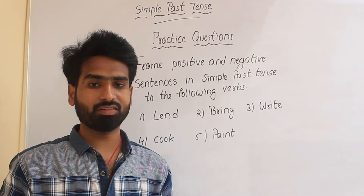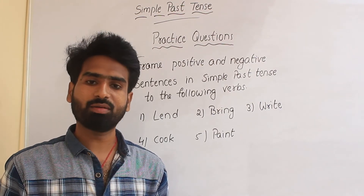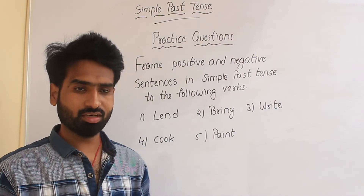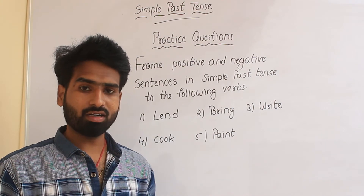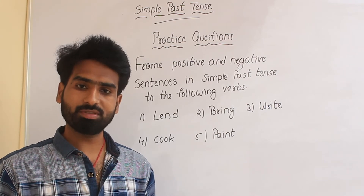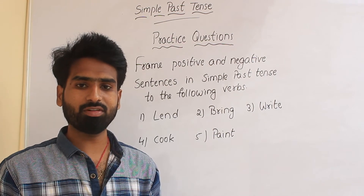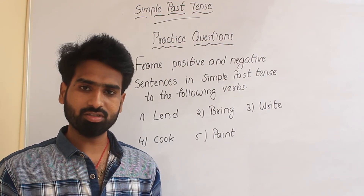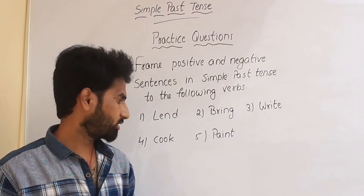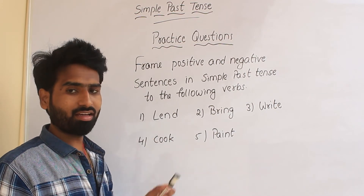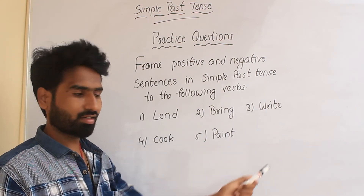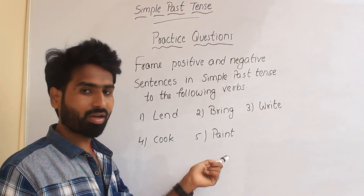Now for practice questions: Frame positive and negative sentences in simple past tense using the following verbs — LEND, BRING, LIGHT, COOK, PAINT. Write your answers in the comments section below.